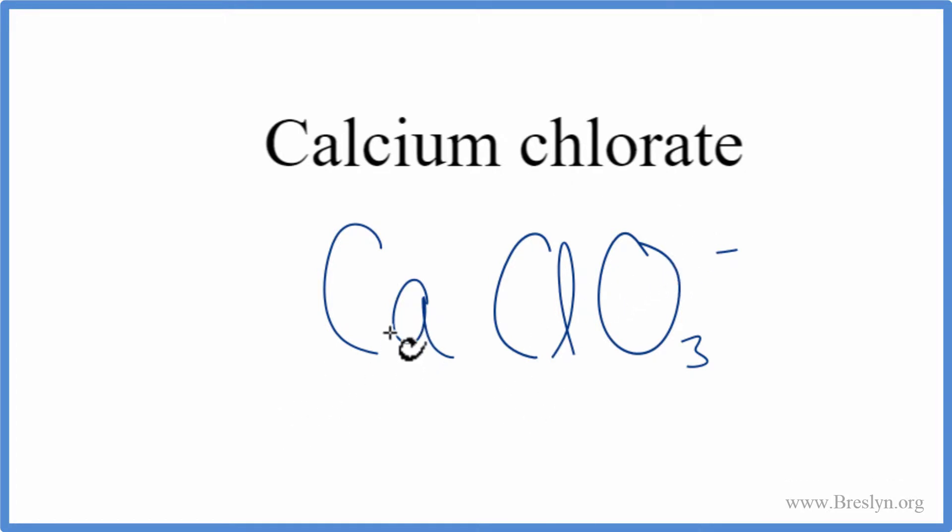So calcium on the periodic table is in group 2. That's a 2-plus ionic charge. And we said that the chlorate, the whole chlorate ion, has a 1-minus ionic charge.